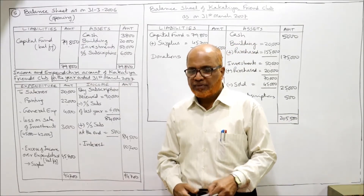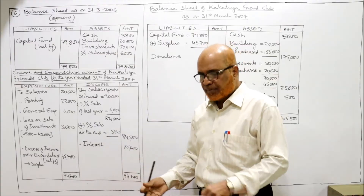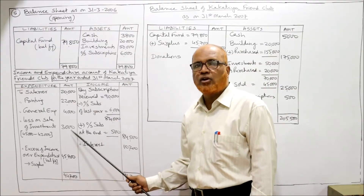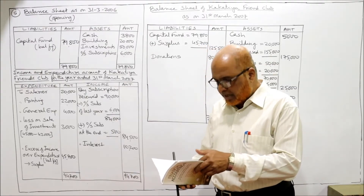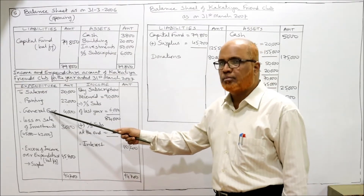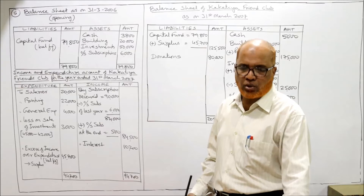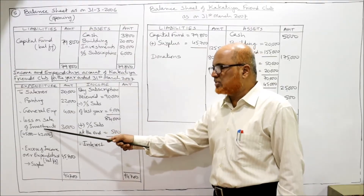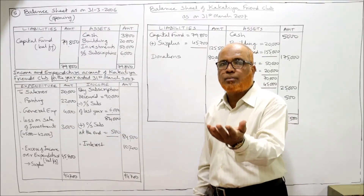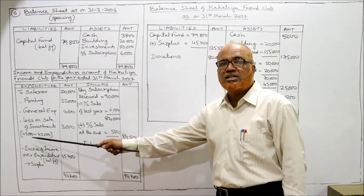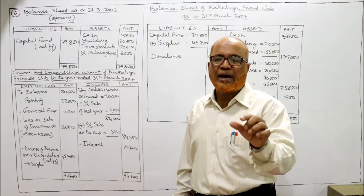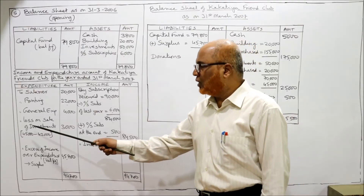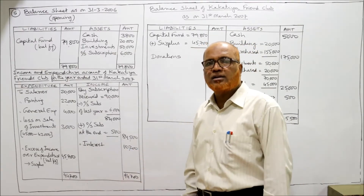On the payments side: salaries 20,000 are taken directly. Building purchased and investment purchased are capital expenditure and do not appear in the income and expenditure account. Printing and general expenses are revenue expenditure and are included. Closing balance is not taken in income and expenditure — it goes to the balance sheet. Loss on sale of investment: book value was 45,000, sold for 42,000, so loss of 3,000 is recorded.